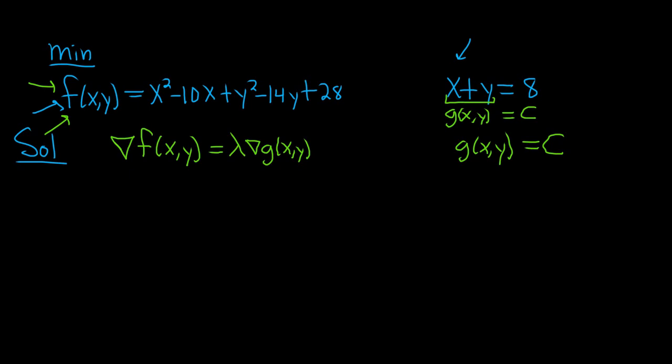Recall the gradient of a function is the vector whose components are the first partial derivatives. So the first partial derivative of f with respect to x is the first component, and the partial derivative of f with respect to y is the second component. Likewise, here we have lambda, and then we have g_x and g_y. So let's go ahead and work this out.